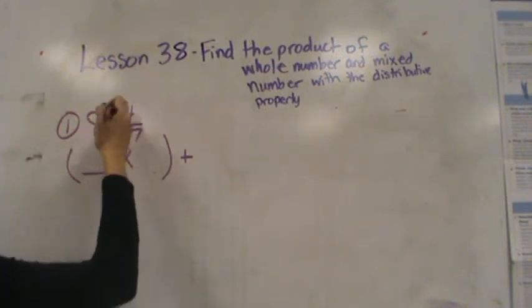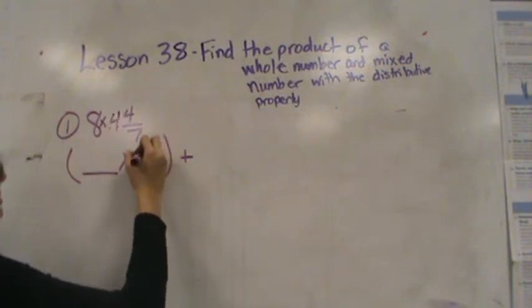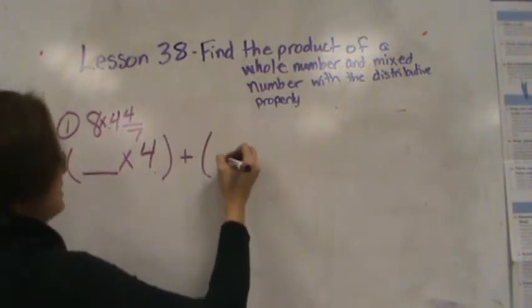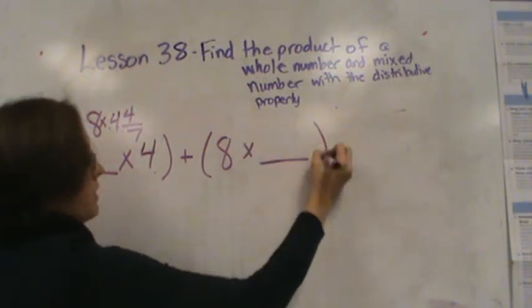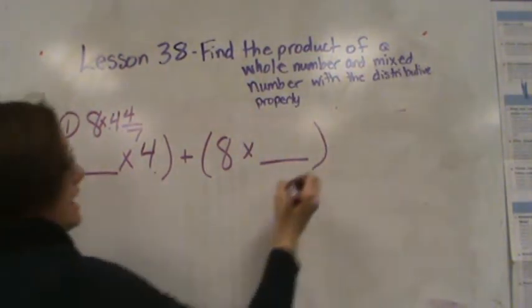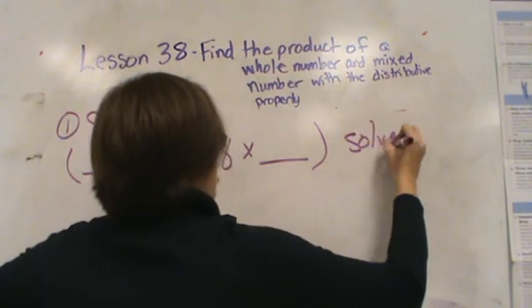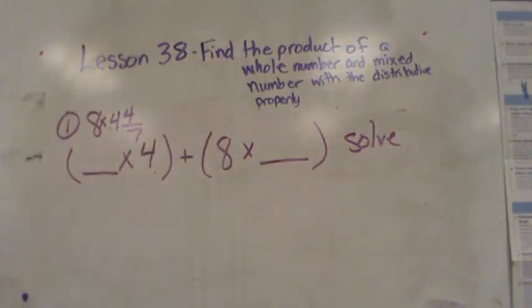8 times 4 and 4 sevenths. That's going to make so much more sense. 8 times 4 plus. All right, you're going to fill in those blanks and solve. So you have to do both. Fill in the blanks and solve.